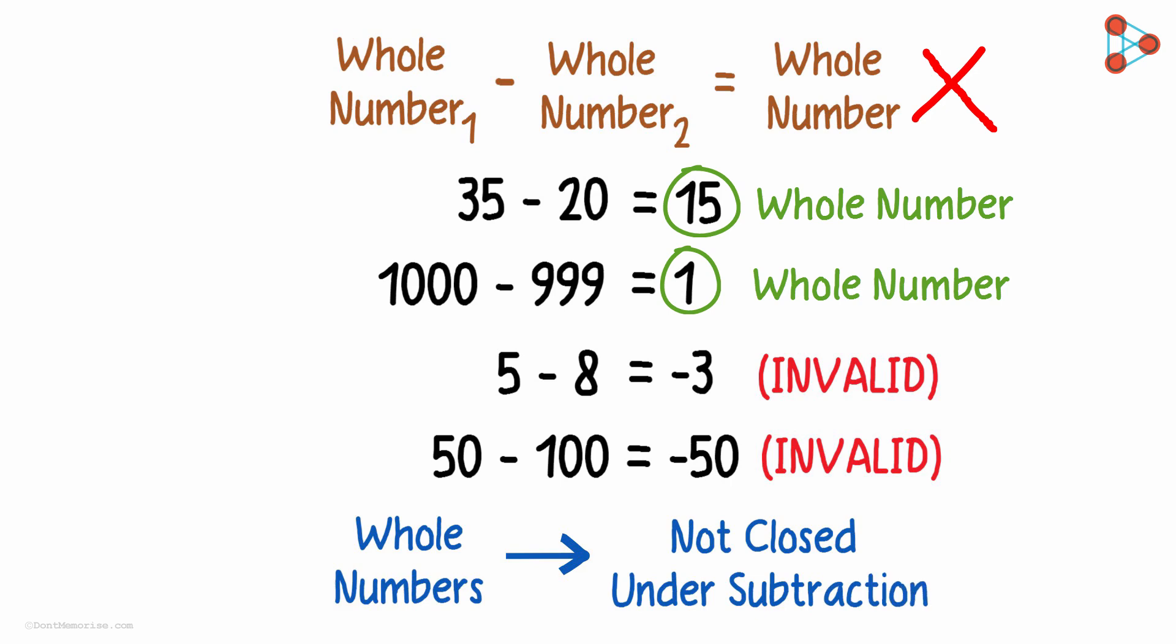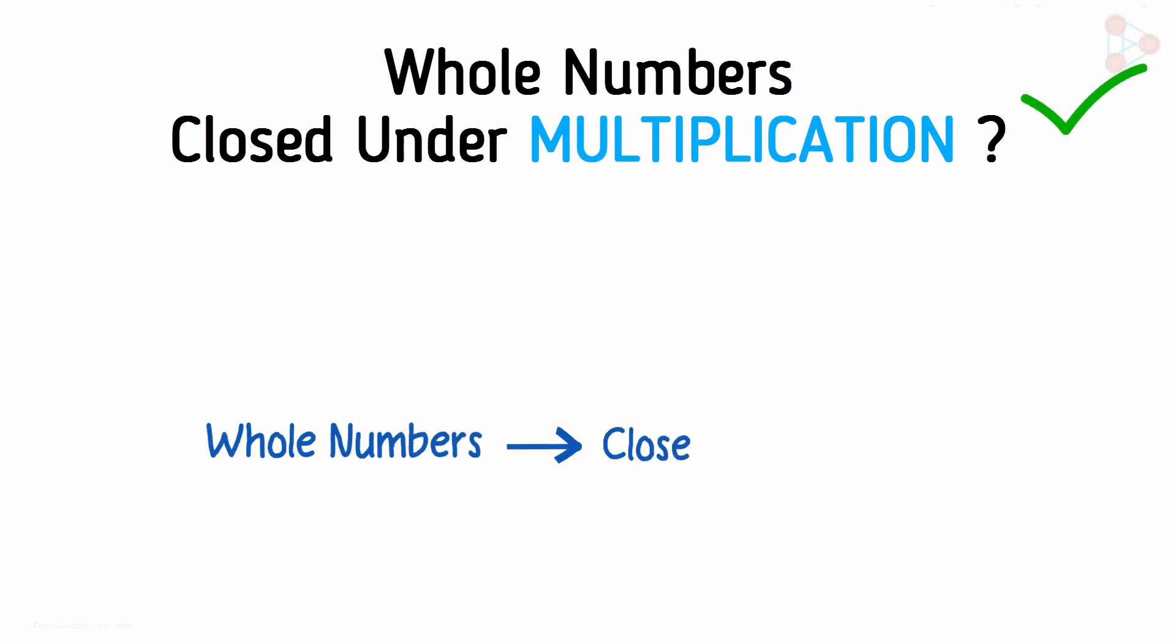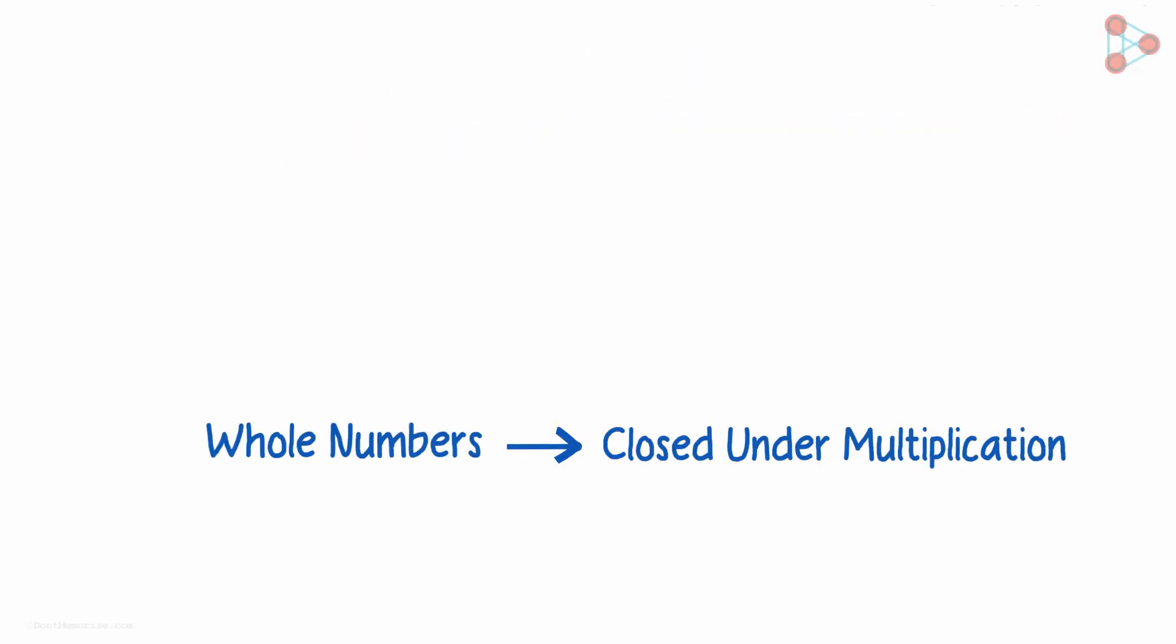What about multiplication? Are whole numbers closed under multiplication? Yes, they are closed under multiplication. When you multiply any two whole numbers, you will always get a whole number. Here are a few examples to support this argument.